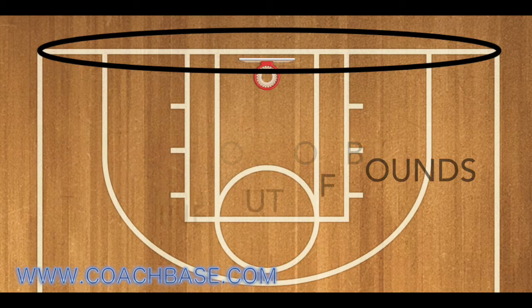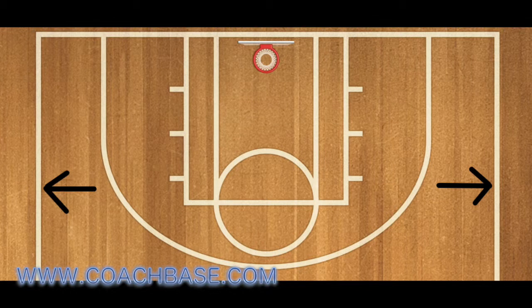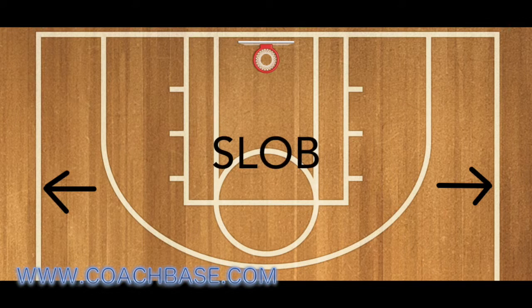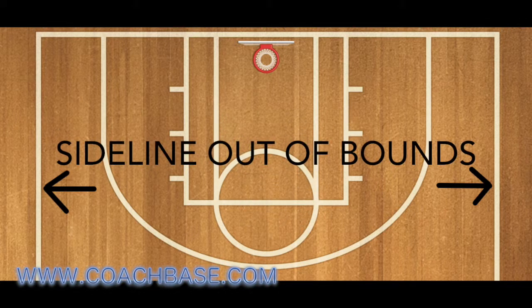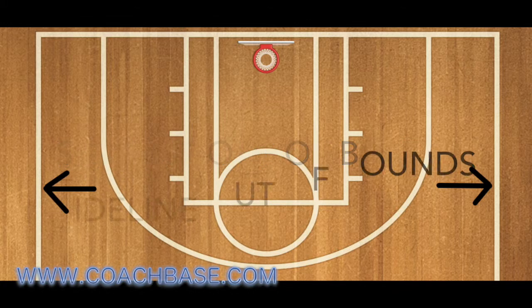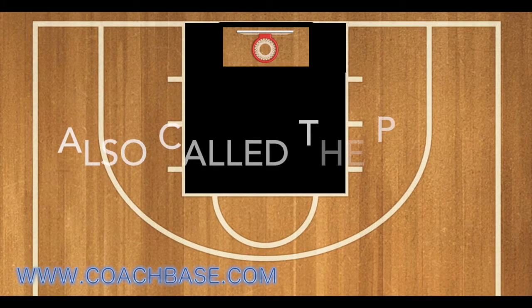Next is the sidelines. Those are the lines on the side of the court. You might have heard of SLOB plays — S-L-O-B — that means sideline out of bounds.